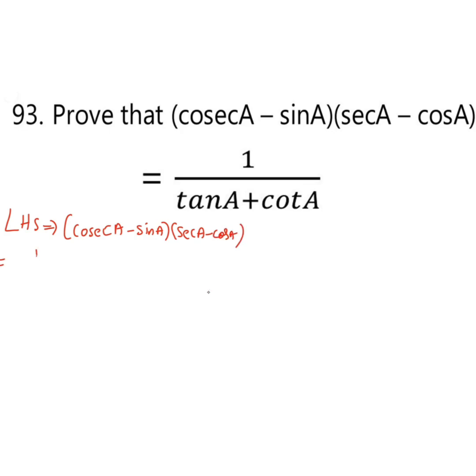Now we will write cosecant as 1 by sin A minus sin A. Then secant is 1 by cos A minus cos A.